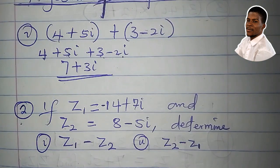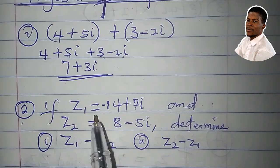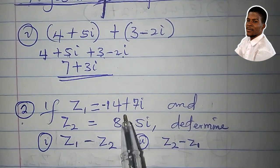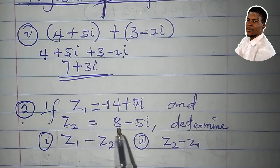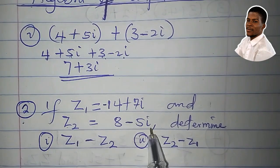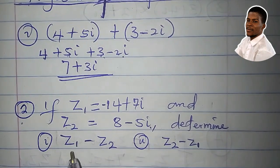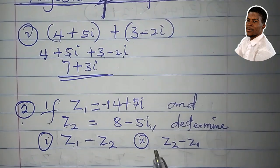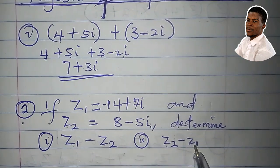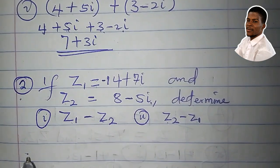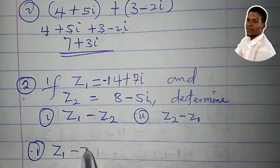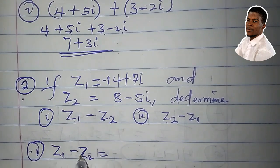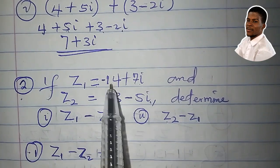Let's see for subtraction. If z1 is equal to minus 14 plus 7i and z2 is equal to 8 minus 5i, we are to determine z1 minus z2 and z2 minus z1. Let's start with the first one, z1 minus z2. It is equal to...